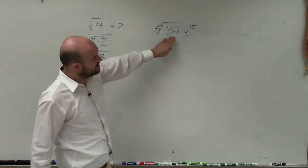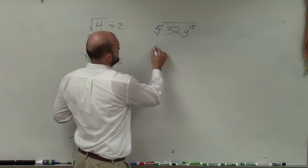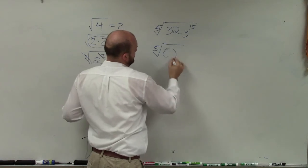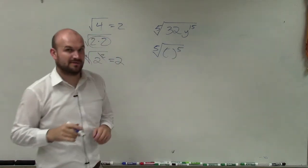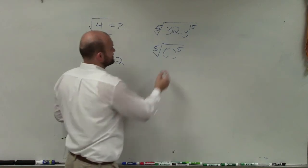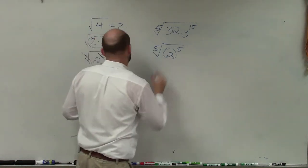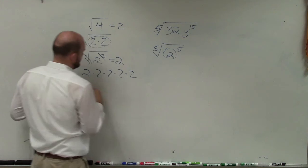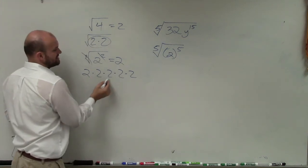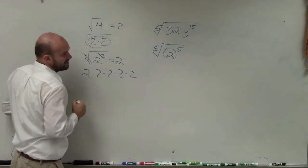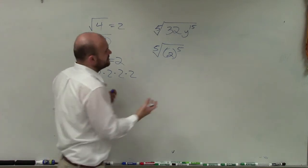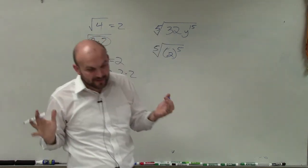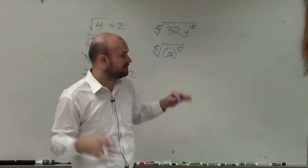So is there a number I can rewrite as a fifth power? Yes — that number is going to be two. Let's double check: two times two times two times two times two. Two times two is four, times two is eight, times two is 16, times two is 32.